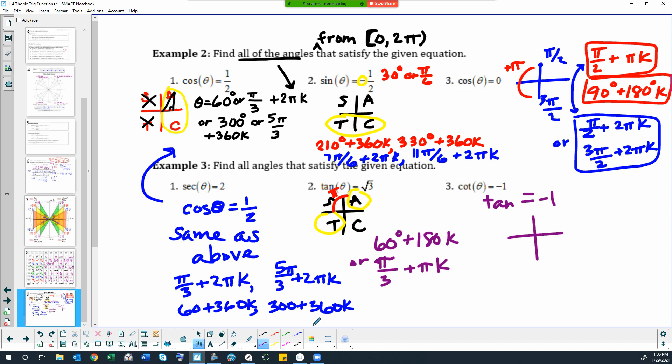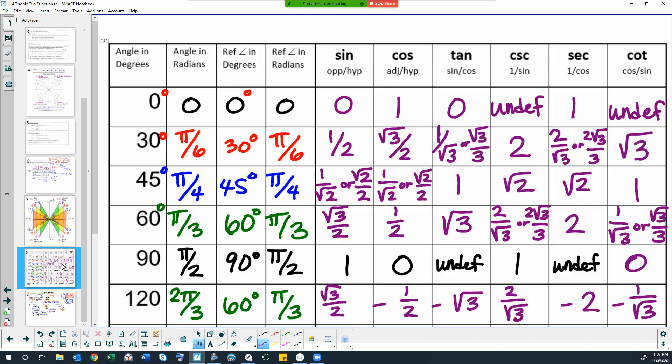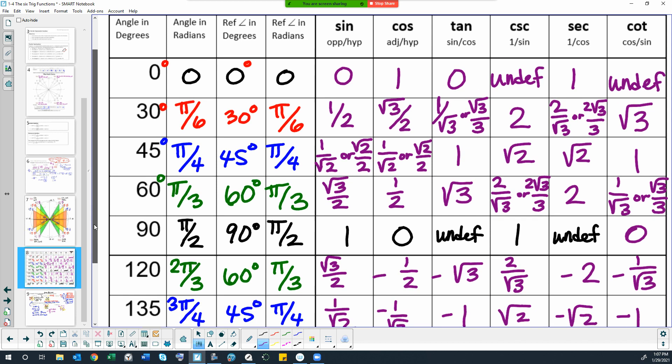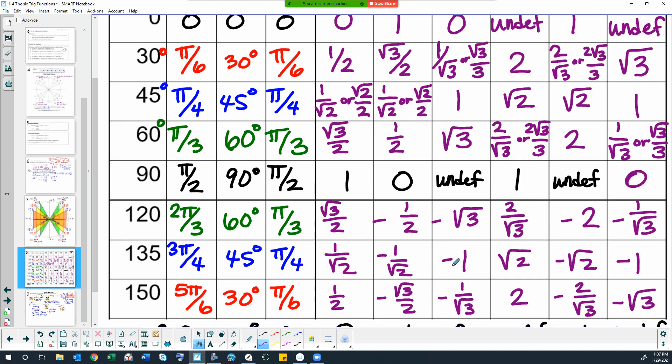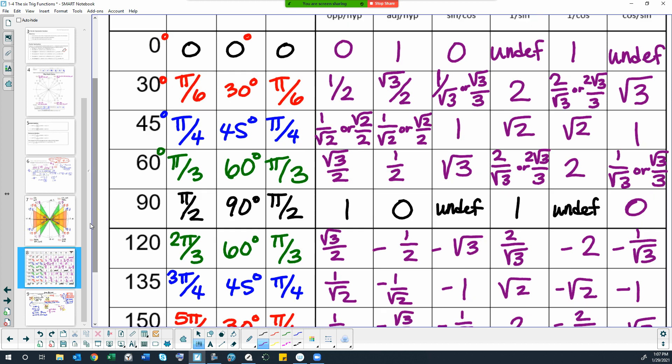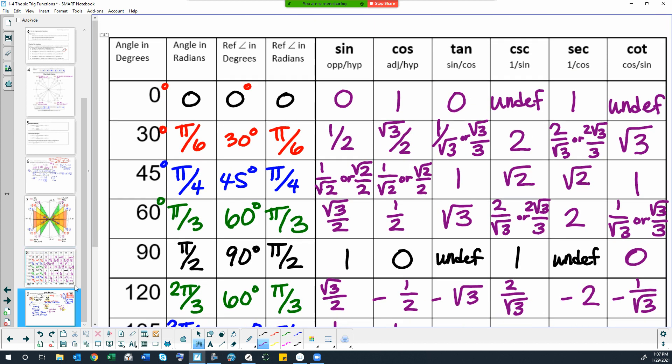So let's look at what quadrants tangent is negative in. Tangent would be negative in quadrant two and quadrant four. So then let's look at our chart really fast. Tangent is one at 45 degrees. So that means tangent is negative one at 135 and then at the fourth quadrant angle with the 45 degree reference angle.